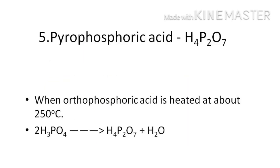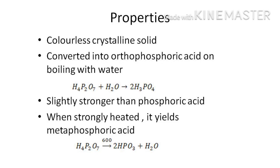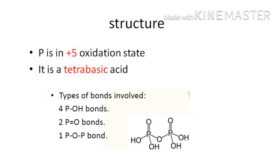Next is pyrophosphoric acid, H₄P₂O₇, also called diphosphoric acid. It is obtained by heating orthophosphoric acid to 250°C. It is a colorless crystalline solid with a melting point of 61°C. It is reconverted into orthophosphoric acid on boiling with water and is a slightly stronger acid than phosphoric acid. When heated strongly, it yields metaphosphoric acid. Phosphorus is in the +5 oxidation state; it is a tetrabasic acid containing four P–OH bonds, two P=O bonds, and one P–O–P bond.